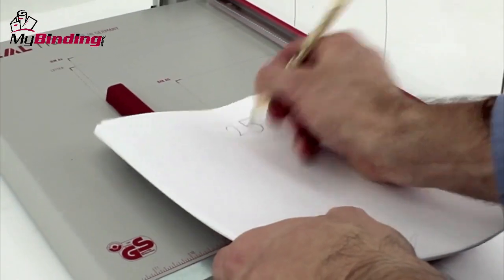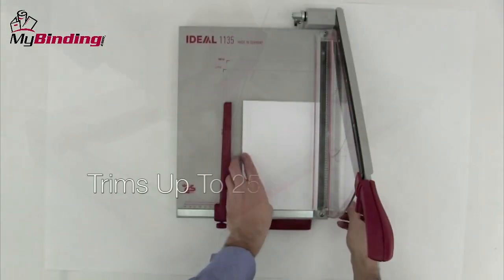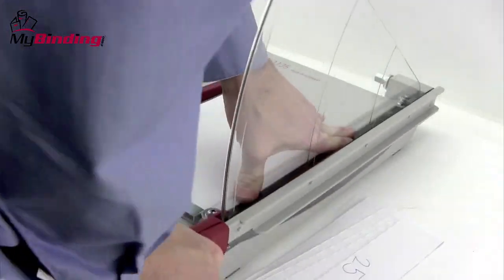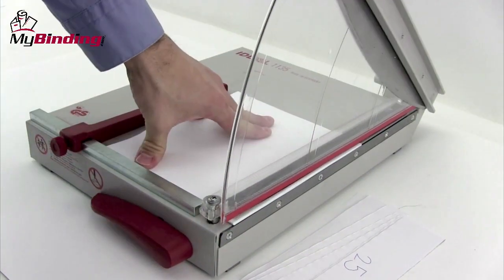It's great for trimming paper, card stock, photos, and laminated materials and can handle up to 25 sheets of 20lb paper in a single trim. We tried it out. It worked with no hassle.